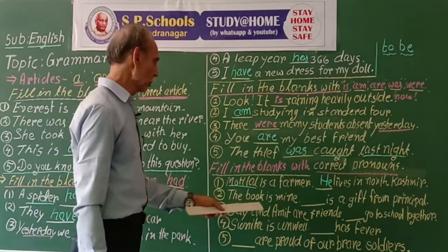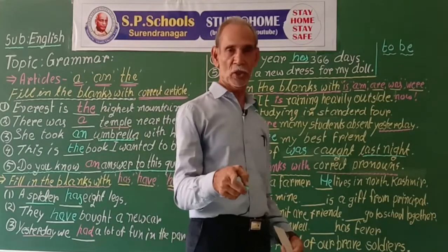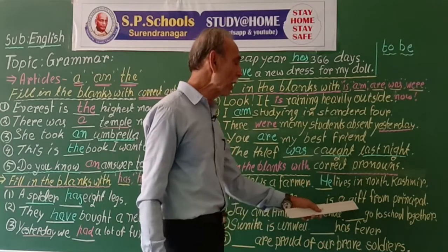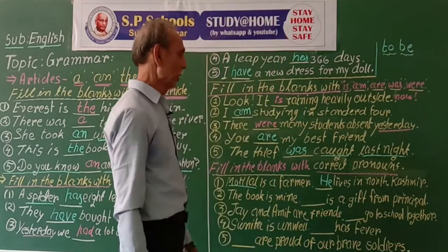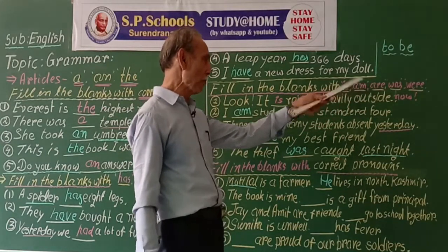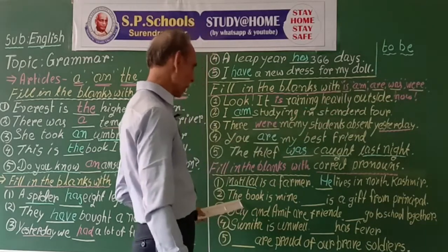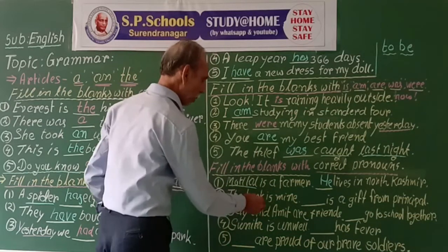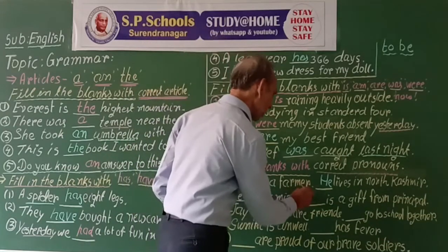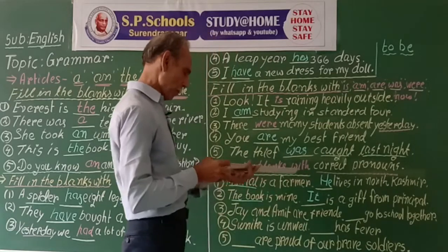The book is mine. The book is a gift from the principal. 'The book' is an object, so we use 'it'. It is a gift from the principal.